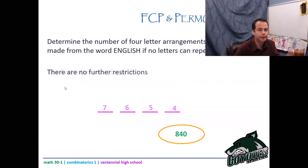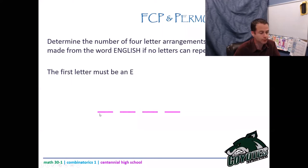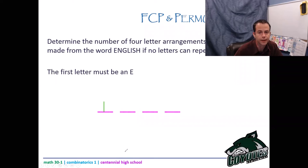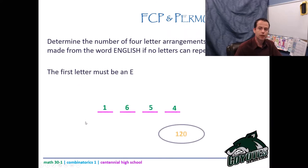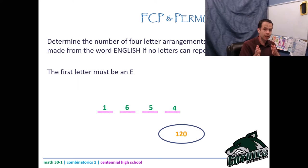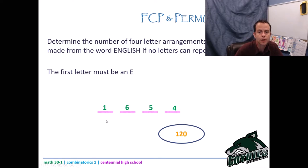What if the first letter has to be an E? Well, there is only one E, which means there is only one thing I can put in that first spot. So I put one there. Now I have six letters left: six, five, and four for the remaining spots. So one times six times five times four would be 120.